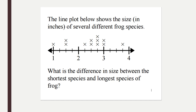The line plot below shows the size in inches of several different frog species. It's important in this problem that I know we're working in inches. The question asks: what is the difference in size between the shortest species and longest species of frog? I'm going to box the word difference, and I'm going to underline the two words that help me find the numbers I'm looking for: shortest and longest.